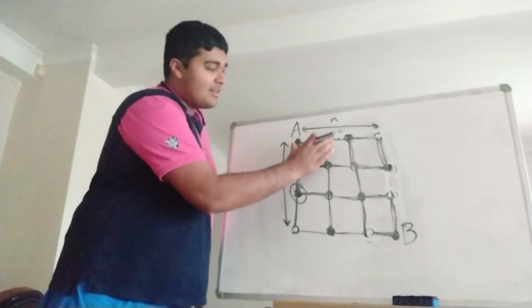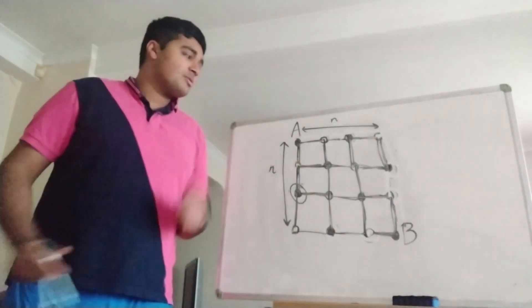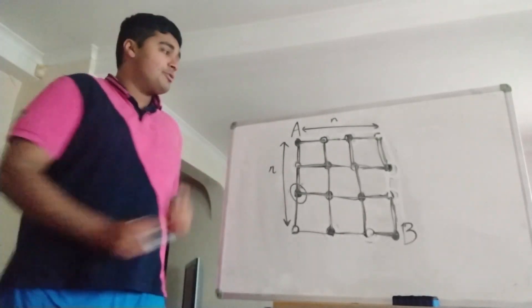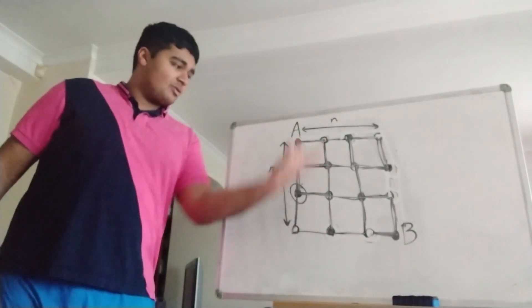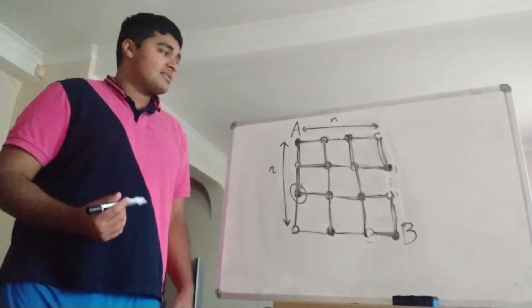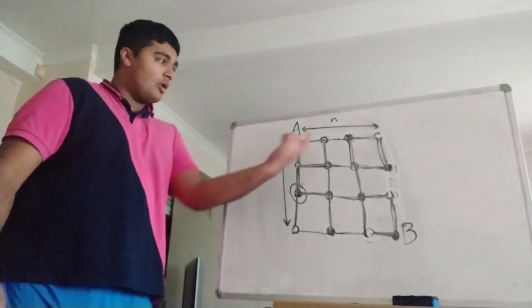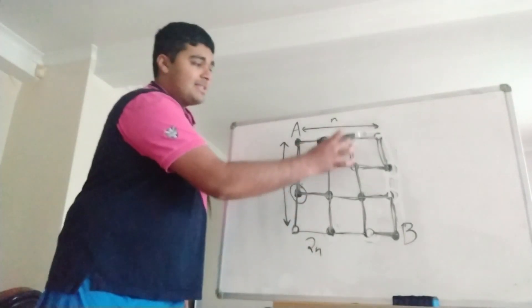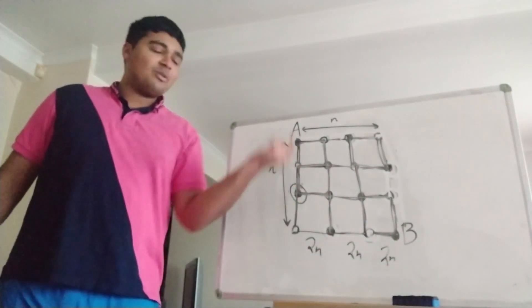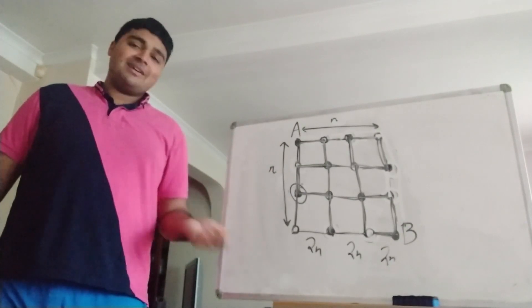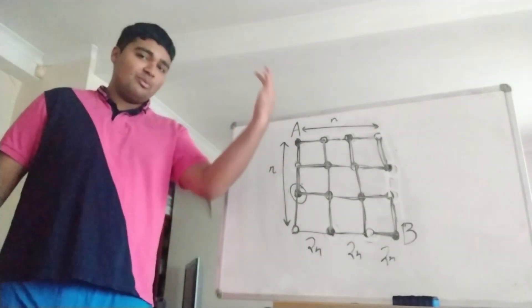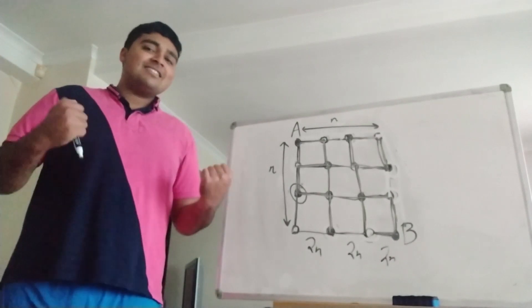We can verify this path has length 2n². Looking at each column of blocks: there are n horizontal edges and n vertical edges, giving 2n edges per column. There are n such columns, so the total is 2n × n = 2n² edges. We've found a path of length 2n² and shown that any path has length at most 2n², so the maximal path length from A to B is exactly 2n².